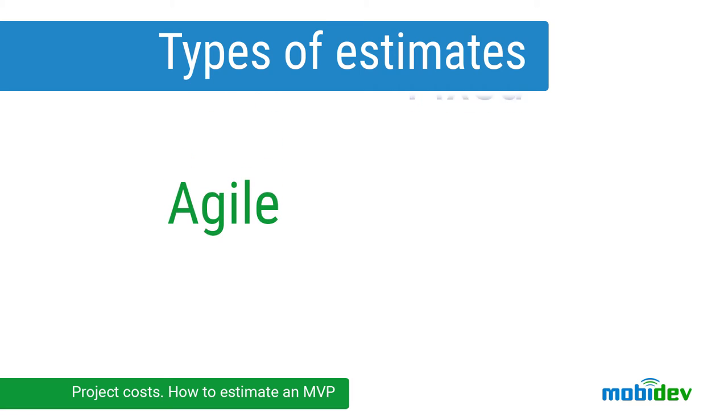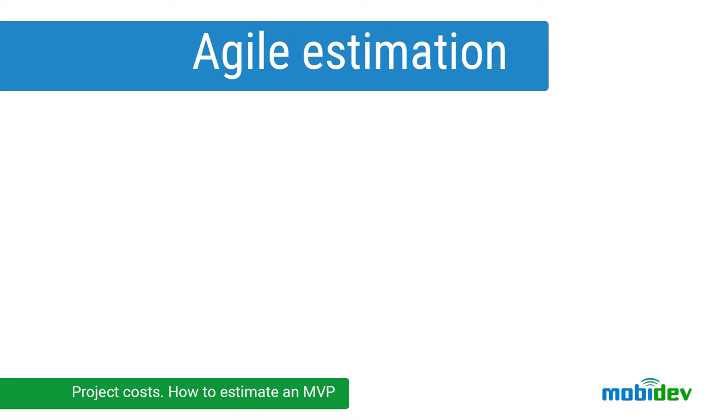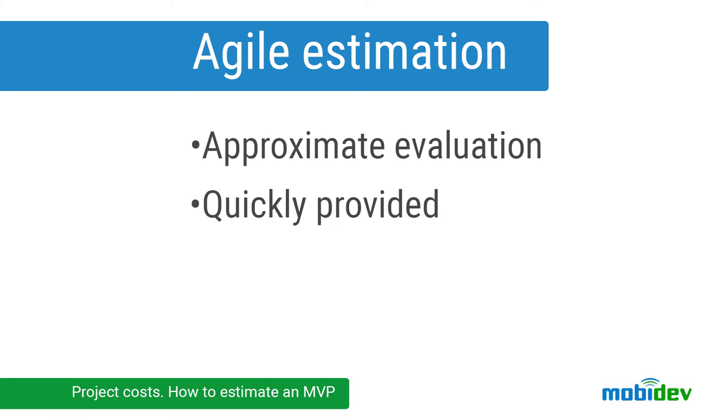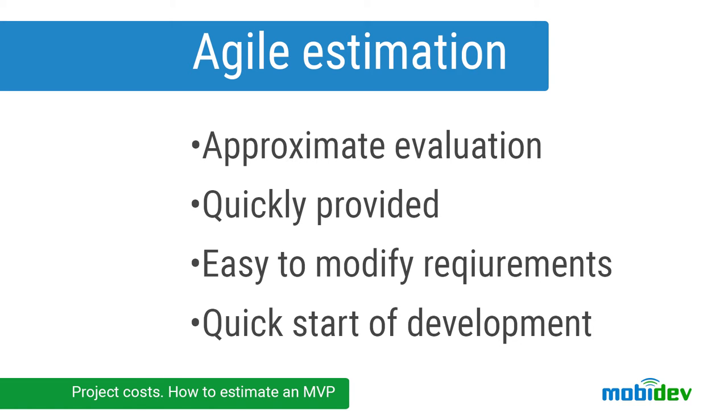So let's discuss two different approaches for estimation. Estimates can be carried out for agile or fixed cost development methodology. Estimate for agile development is an approximate evaluation based on requirements available at the moment. It's very fast and simple — an estimate can be given even with a conceptual description of requirements. However, such an estimate can be several times smaller than the final cost due to changes in requirements.